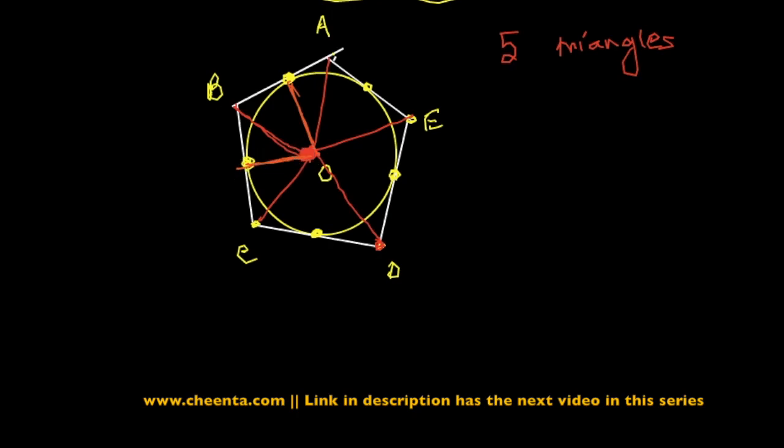Now if you join the center with the point of tangencies, all of them will be right angles because obviously the radius is at a right angle with the tangent at the point of tangency. So now if we wanted to compute the area of each of these triangles, let's say we want to compute the area of triangle OAB. That is equal to half times this length, which is the radius, times AB.